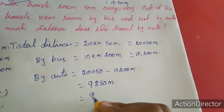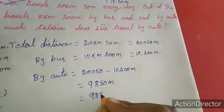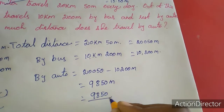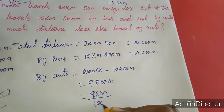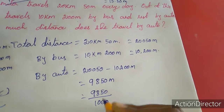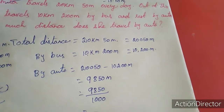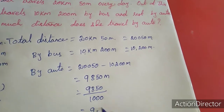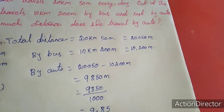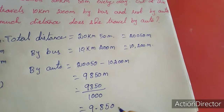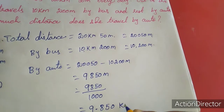So 9,850 divided by 1000. With 3 digits before the dot, that means 9.850 kilometer is the distance traveled by auto.